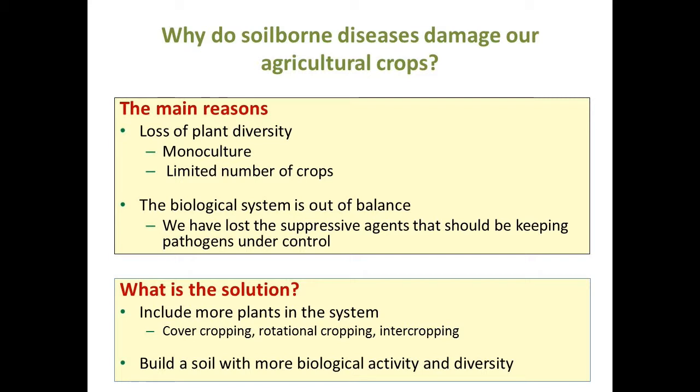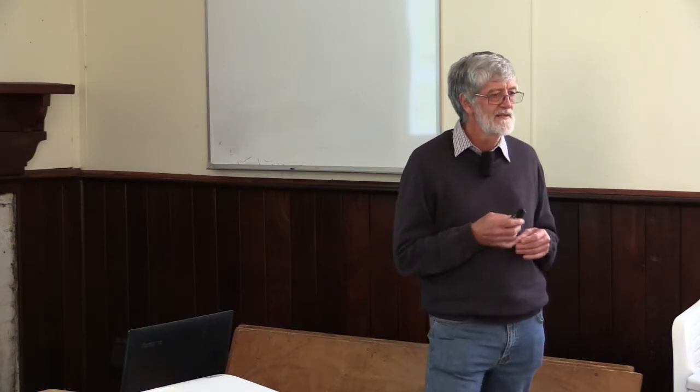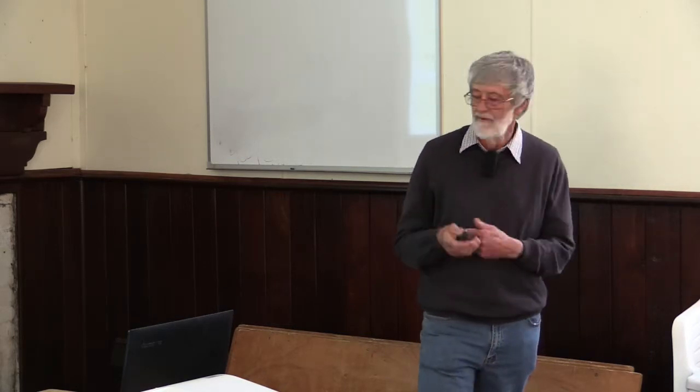We've lost some of that diversity we used to have, so the solution is to try and build back some diversity by getting more plants into the system. Things that can be done include cover cropping and rotational cropping. In Queensland we've got sugar growers who instead of growing a single rotation crop are trying multi-species mixes - there's a guy in Mackay with an 8-species mix because he wants diversity back in the system. It's early days in terms of whether we're actually getting benefits, but every plant has different types of root systems - some go deep, some don't - which helps create diversity.